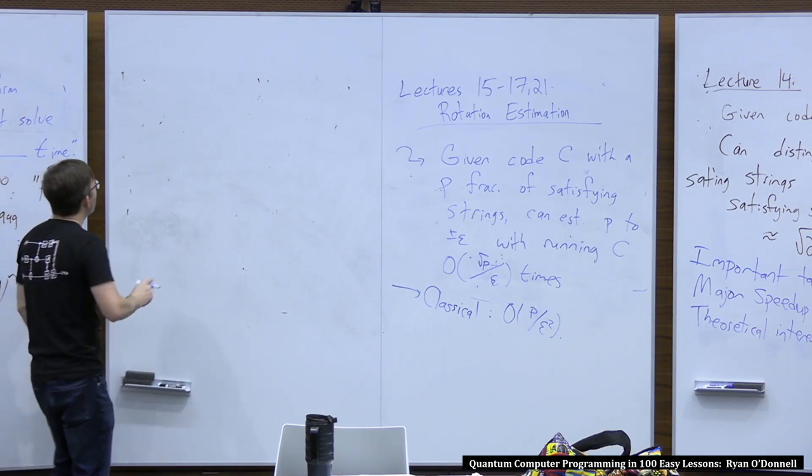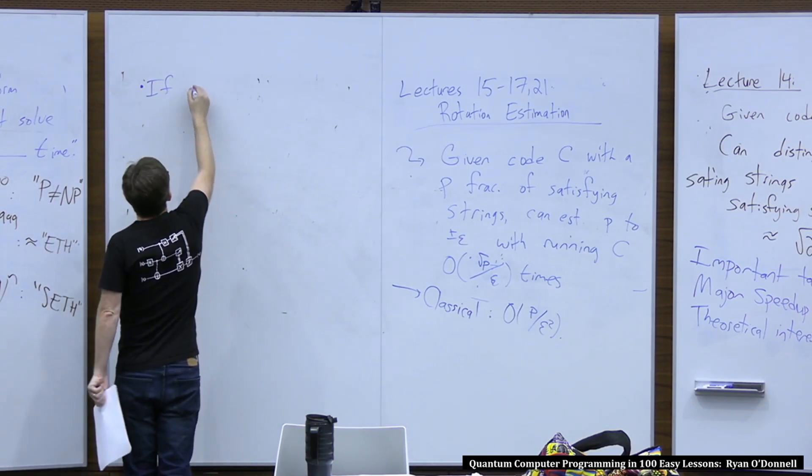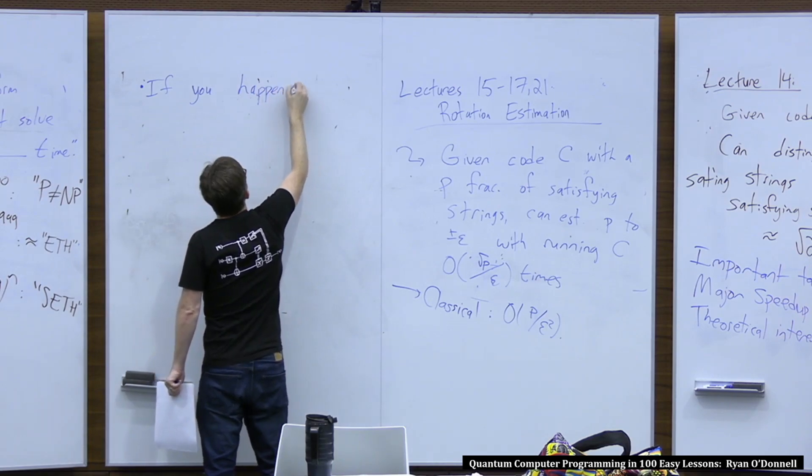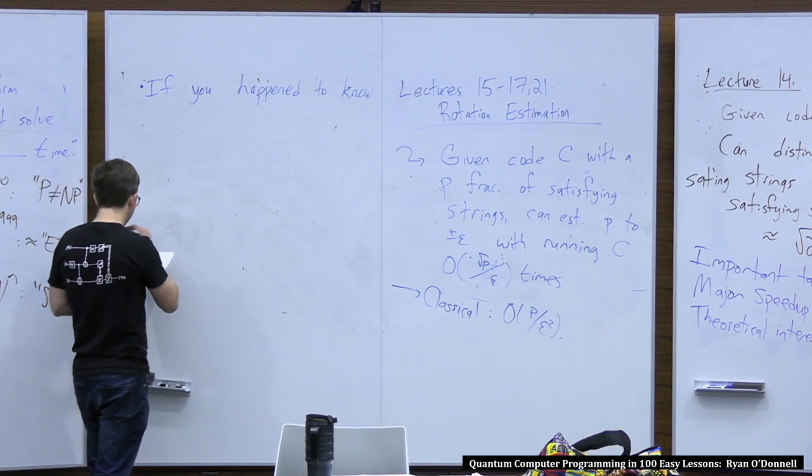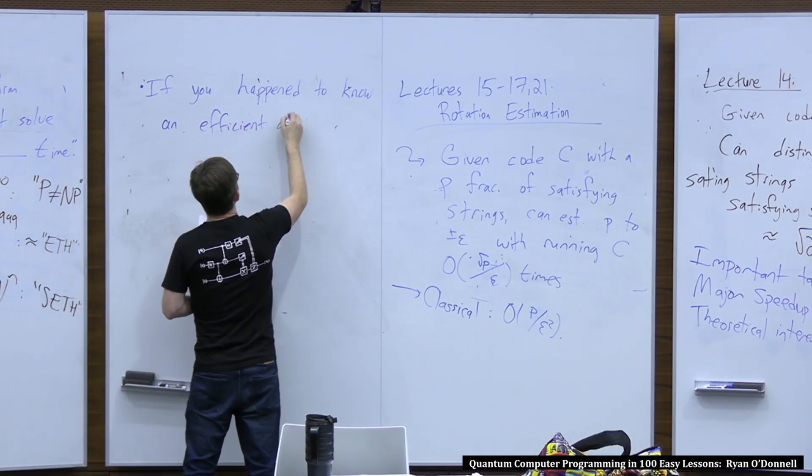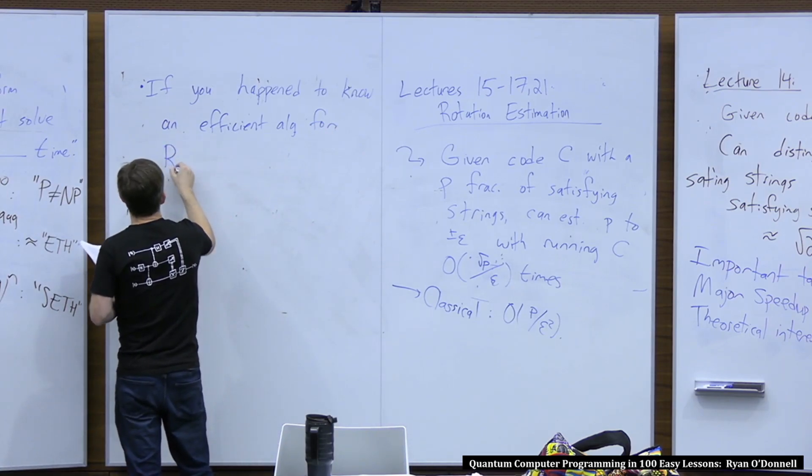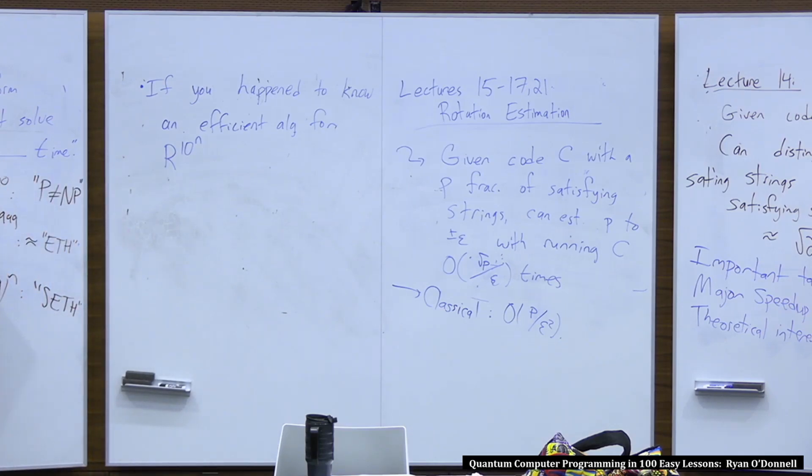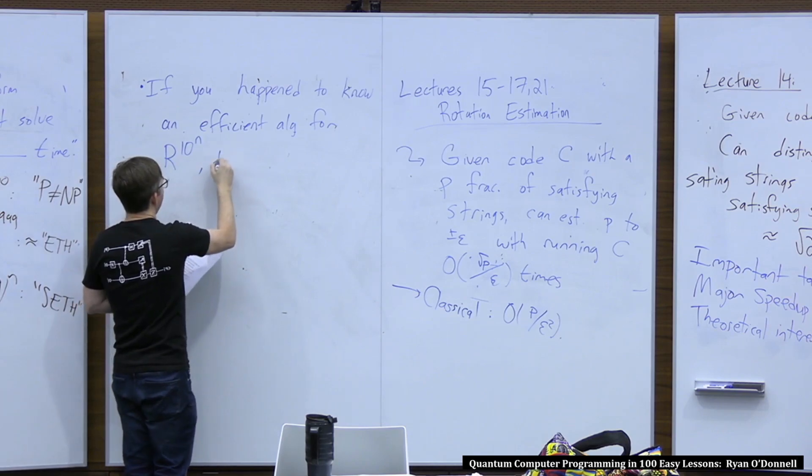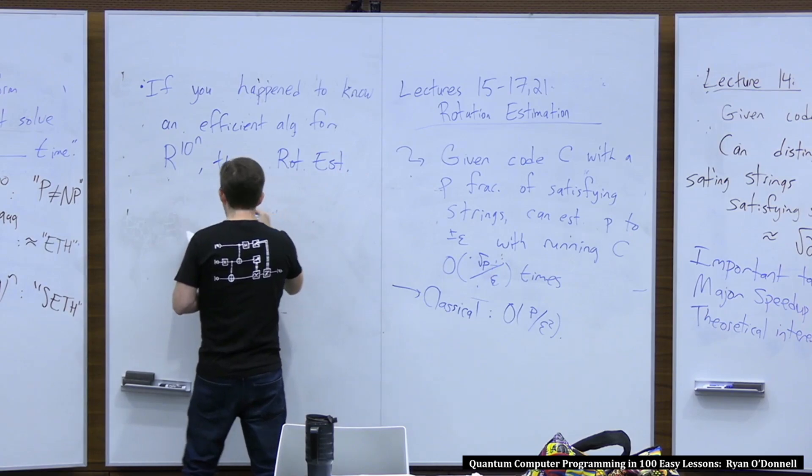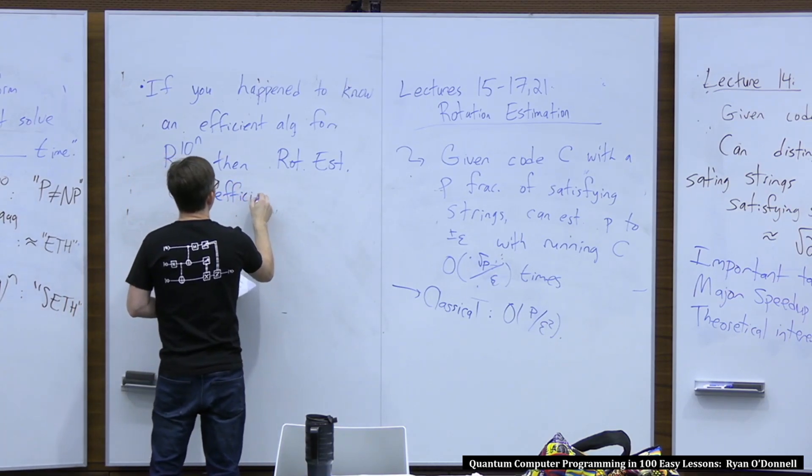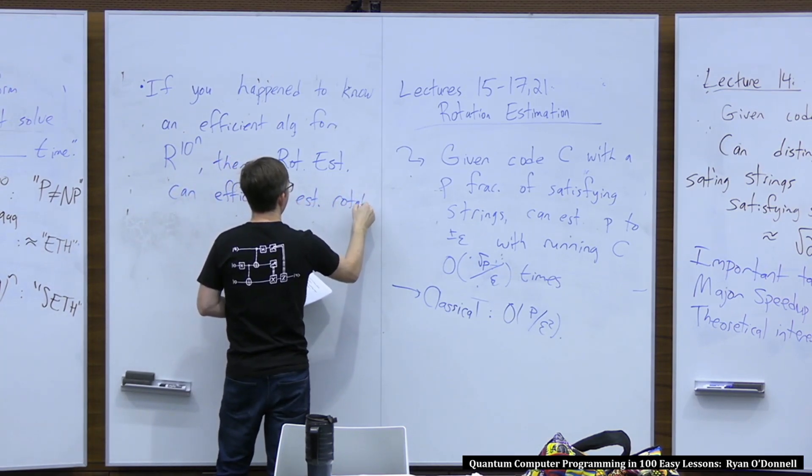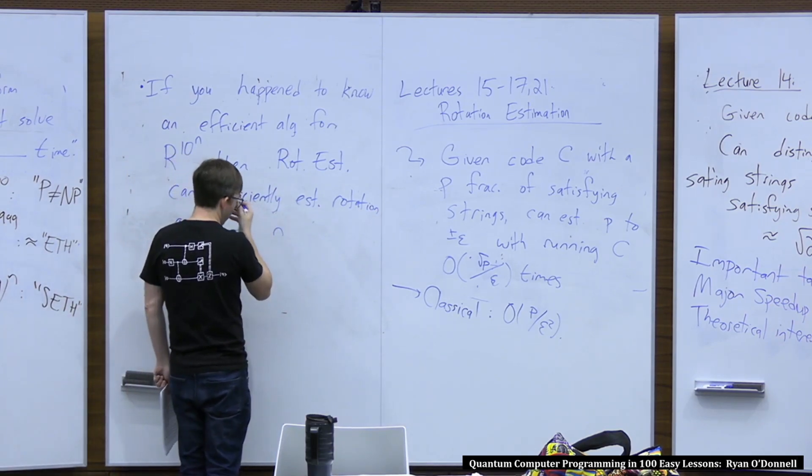But we saw that perhaps if for some reason you were in a situation where you happened to know a very efficient algorithm for doing the unitary 100 times or 1,000 times or 10 to the n times, then you could actually speed this up a lot. So if you happen to know an efficient algorithm for r, r is your rotation or your unitary, repeated 10 to the n times, like 10 to the 1,000 times, for example, then you can use rotation estimation to get something really great. You can get like n digits of precision in estimating the rotation angle.